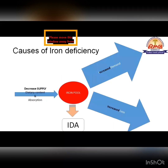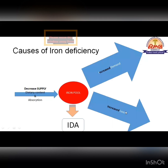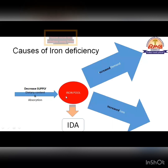If supply decreases, the iron pool will decrease, leading to iron deficiency anemia. If demand increases, the pool of iron will decrease, leading to iron deficiency anemia. Similarly, if the loss of iron or blood increases, it will lead to iron deficiency anemia.